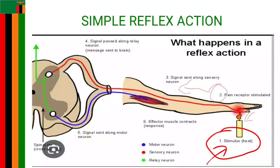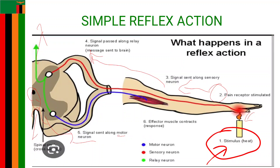The signals travel to the brain via relay neurons, which take the information to the brain so that the brain interprets what the hand or portion of the body has been exposed to. Once the brain has interpreted that information, the information is sent back through the spinal cord. The information is then sent back to the body using the motor neurons, which innervate the effector muscle.